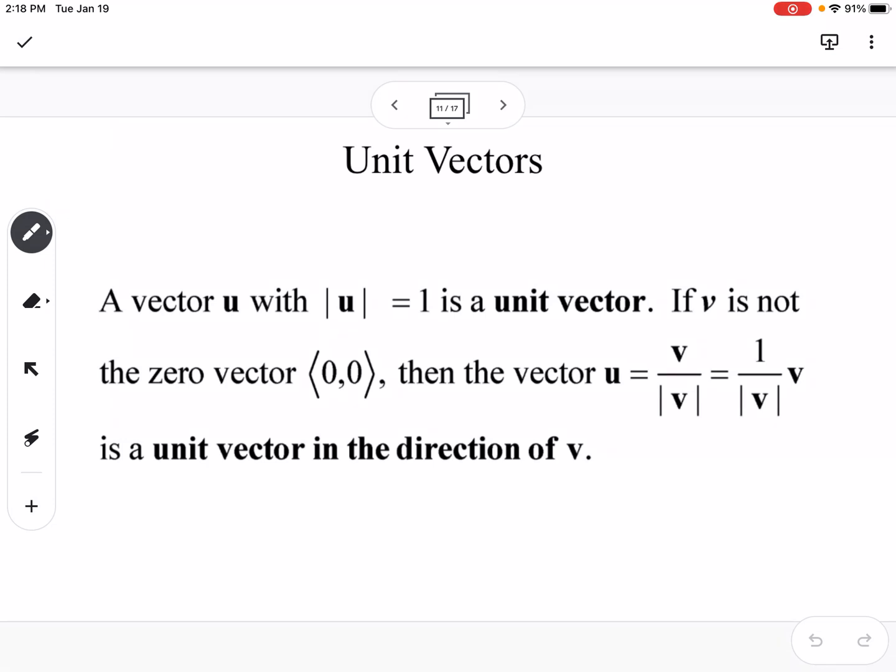Unit vectors: A unit vector is a vector that has a magnitude of 1 in the direction of whatever vector you're talking about. The way that we find the unit vector is you take your vector v and divide it by the magnitude of v, and that will give you the unit vector in the direction of v.